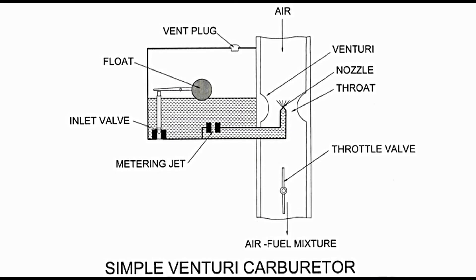Referring to the diagram of a simple venturi carburetor, we find that it consists of a small fuel reservoir with an inlet, float and metering jet. The fuel from the tank enters the reservoir through the inlet. The float keeps the level of fuel in the reservoir constant. The metering jet permits a limited quantity of fuel to the discharge nozzle, which is located in the throat of the venturi, and sprays fuel. The air is supplied from the upper end.